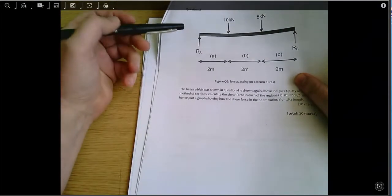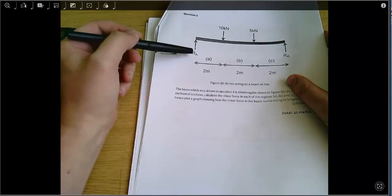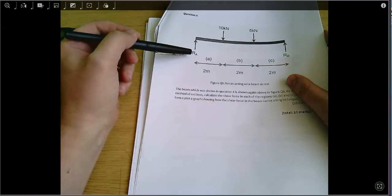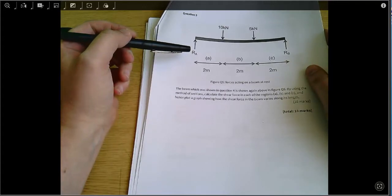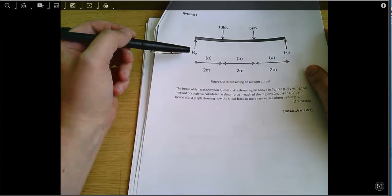In question 4 we calculated these reaction support forces here. Now what we need to do is find the shear force along the length of the beam, and to find the shear force we're going to use the method of sections. So we'll go through that in order.